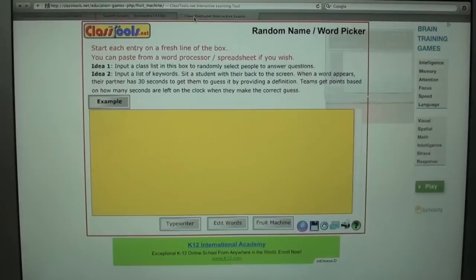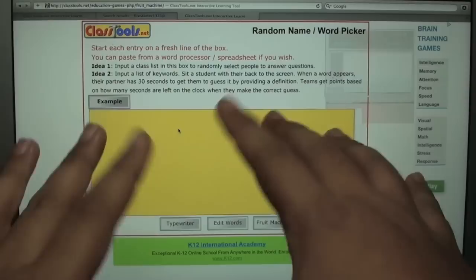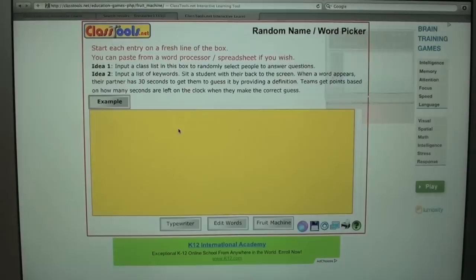What we have here is a random name picker from classtools.net and basically we have to type everything in to do either a fruit machine sequence or a typewriter sequence, but I'm going to do the typewriter thing because it adds more suspense to what we are doing right now.